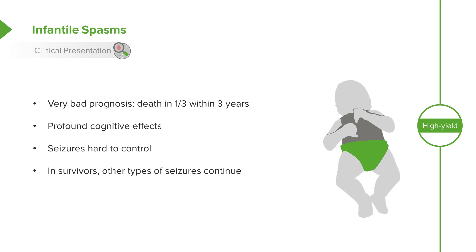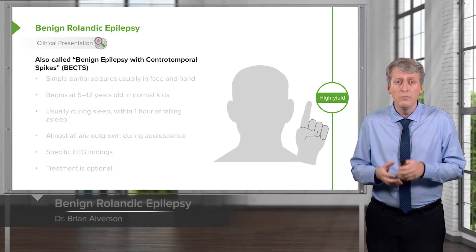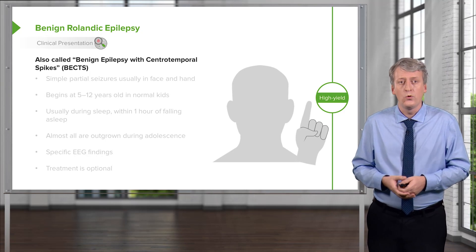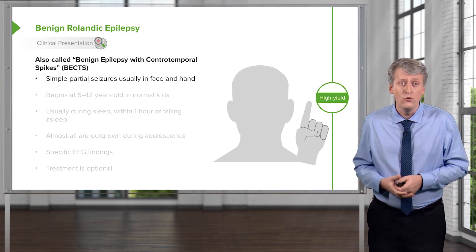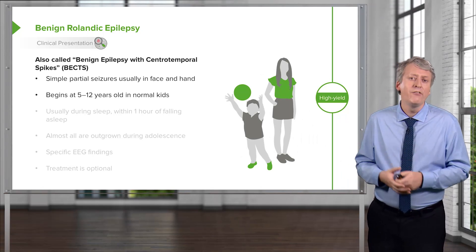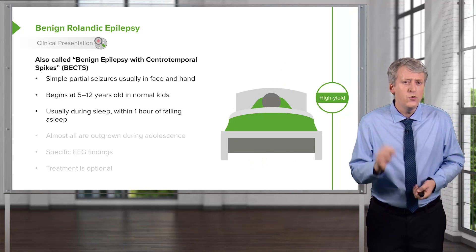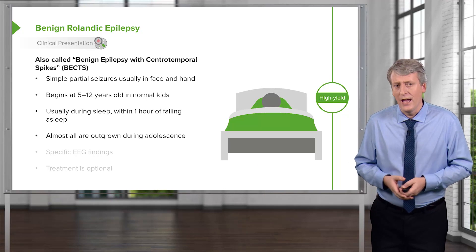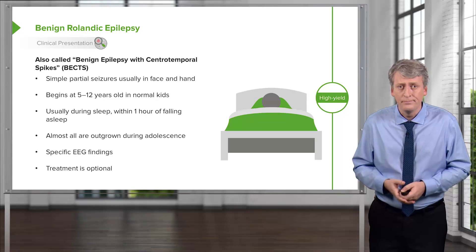A much less concerning type is benign rolandic epilepsy, also called benign epilepsy with centrotemporal spikes, or BECTs. These patients have centrotemporal spikes on EEG and present with simple partial seizures usually involving the face and hand. Onset is typically between 5 and 12 years of age in otherwise normally developing children. Crucially, seizures usually occur during sleep or within an hour of falling asleep. Almost all are outgrown during adolescence, and treatment is optional since the children are asleep when the events occur.